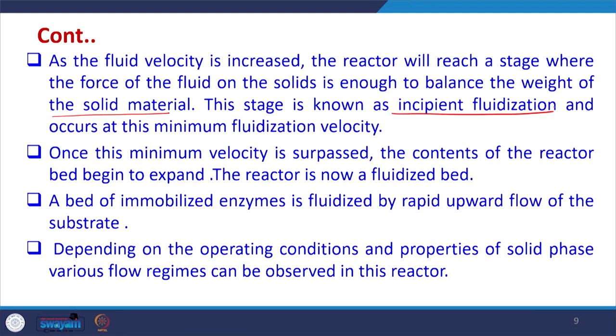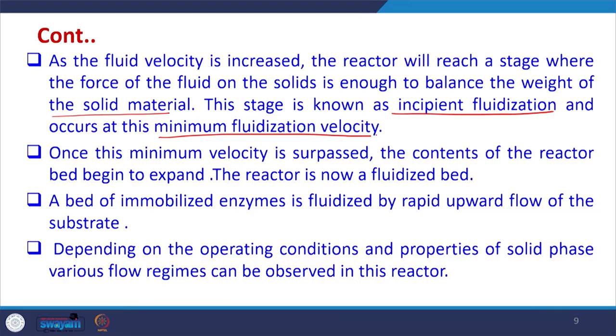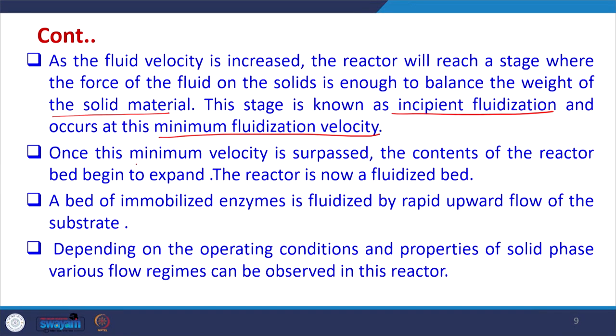As the fluid velocity is increased, the reactor will reach a stage where the force of the fluid on the solids is enough to balance the weight of the solid material. This stage is known as incipient fluidization and occurs at the minimum fluidization velocity. This minimum fluidization velocity depends upon the type of solid, the density of the solid, the biofilm grown on the carrier particle, and the thickness of the biofilm. It also depends on the wastewater characteristics including the amount of suspended materials, COD, and the viscosity of the wastewater. Once this minimum fluidization velocity is surpassed, the reactor bed begins to expand and becomes a fluidized bed.